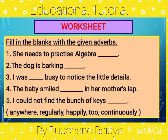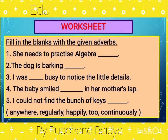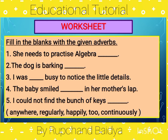Now we have a worksheet to see how well you understood. The exercise is to fill in the blanks with the given adverbs: anyway, regularly, happily, too, and continuously. The sentences are: (1) 'She needs to practice algebra ___.' (2) 'The dog is barking ___.' (3) 'I was ___ busy to notice the little details.' (4) 'The baby smiled ___ in her mother's lap.' (5) 'I could not find the bunch of keys ___.' Pause and try the exercise.